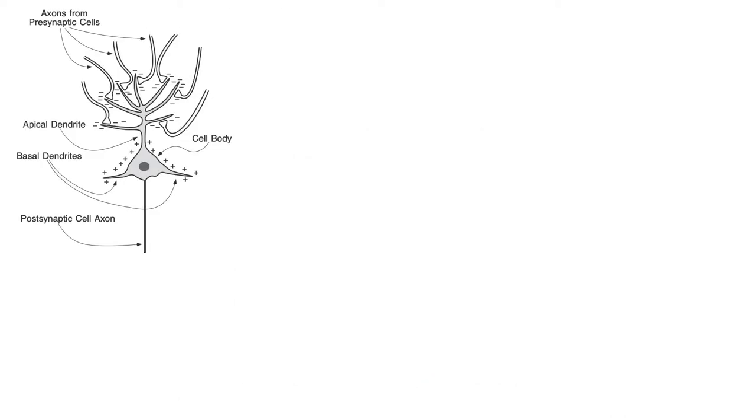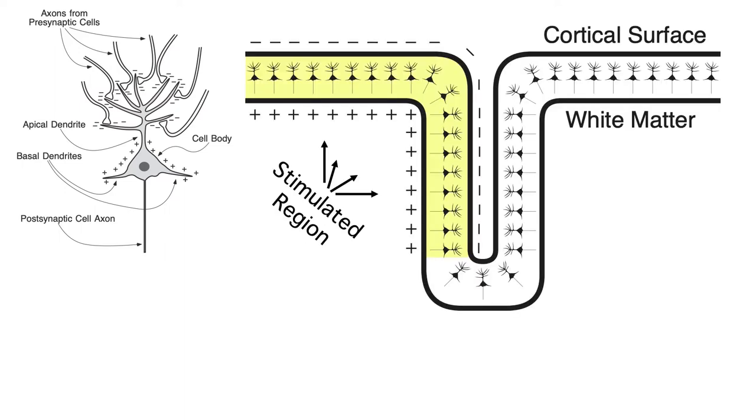Of course, the voltage generated by a single neuron can't be recorded from the scalp. To see a measurable voltage in our scalp electrodes, many neurons must be active at the same time, as shown here. This diagram illustrates a region of cortex that's folded to form a sulcus, with the neurons on one side receiving an excitatory neurotransmitter at their apical dendrites. This leads to a negativity along the surface and a positivity toward the white matter.